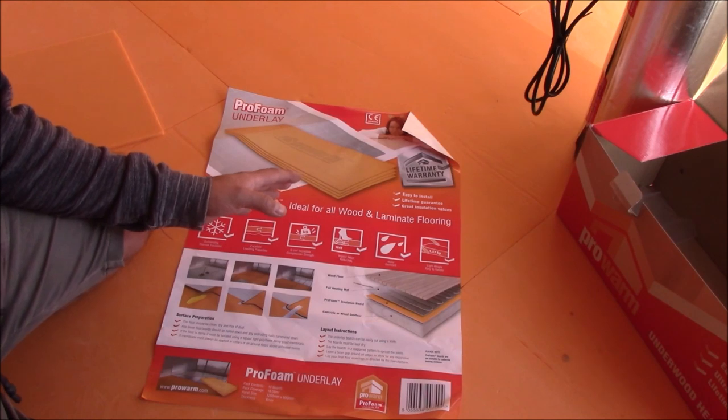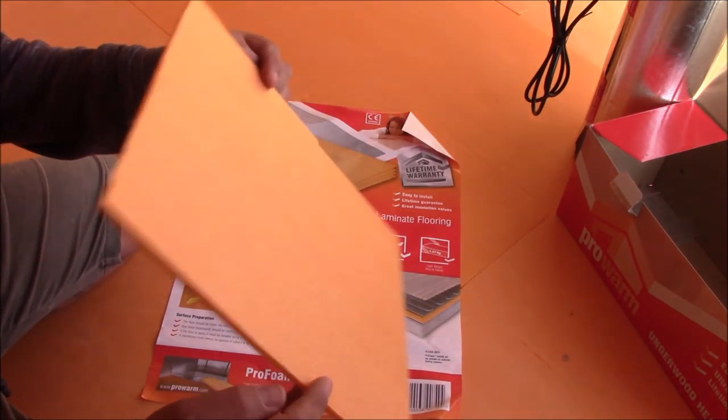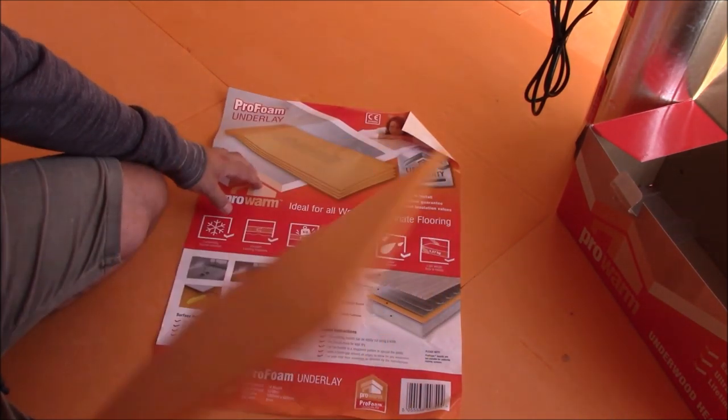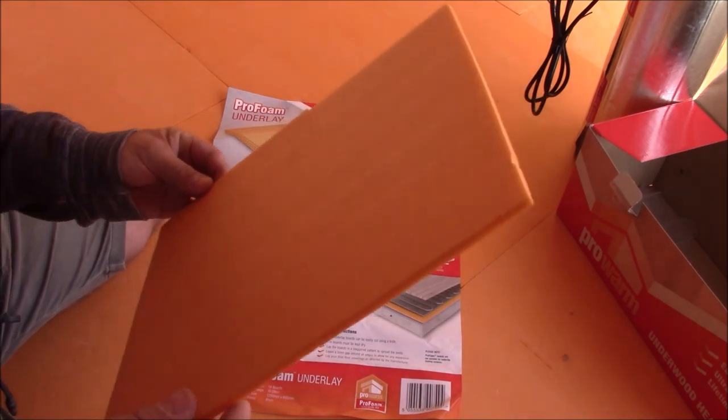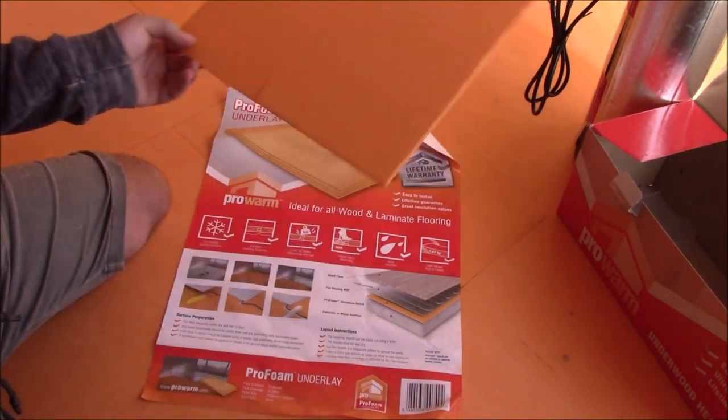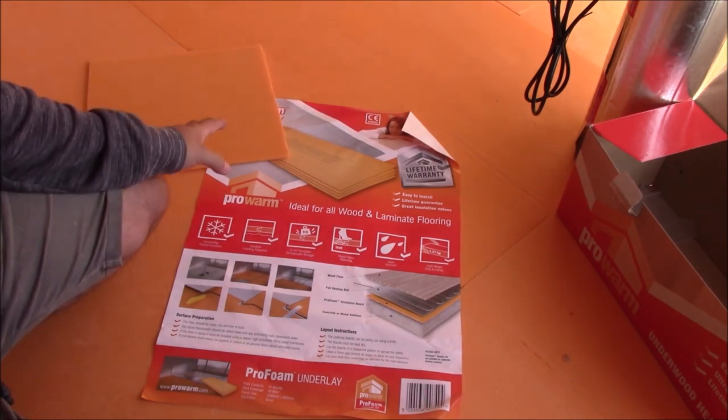So when you buy the mat on the internet, you also need to get the orange board, that's the underlay, the ProWarm underlay. This is 6mm thick, but you can get thicker. And you're putting it straight onto the concrete floor.